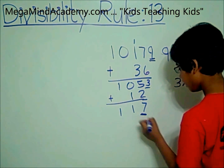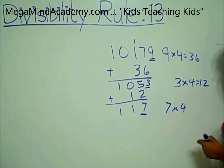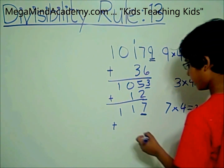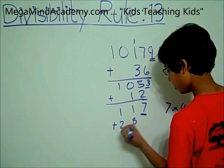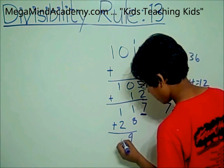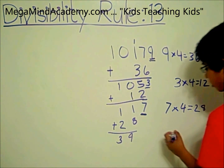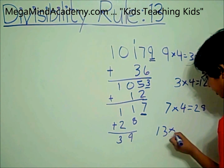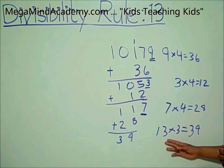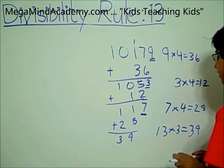Now 7 is the last digit. So you take 7 and multiply by 4, which equals 28, and you add 28 to 11. 11 plus 28 equals 39. And 13 times 3 equals 39, so 39 is divisible by 13. So that means 10,179 is divisible by 13.